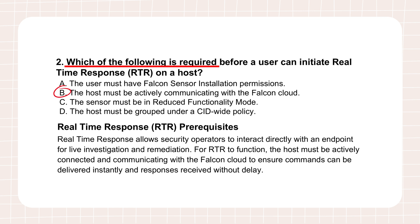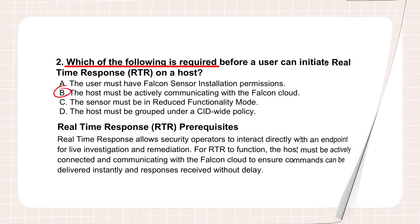Think about what RTR is for: it's like having a remote command prompt or shell directly on that endpoint. You're running commands — show me processes, delete this file, get this registry key — and you expect an immediate response. It's interactive. If the host isn't actively connected, that live interaction just isn't possible. Commands wouldn't go through instantly, responses wouldn't come back. If an endpoint drops offline, you lose that immediate RTR capability until it reconnects. That active connection is fundamental to how RTR actually functions, highlighting how much of Falcon's real-time power depends on that sensor-cloud link.